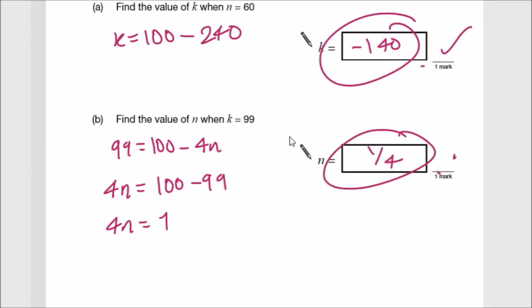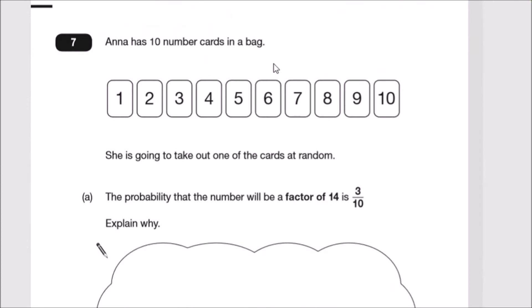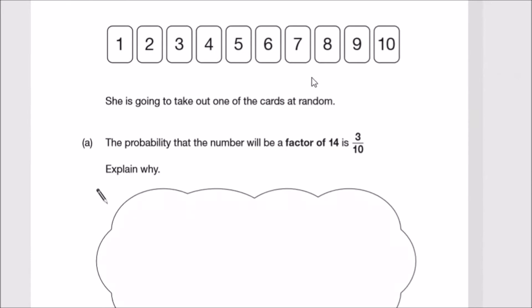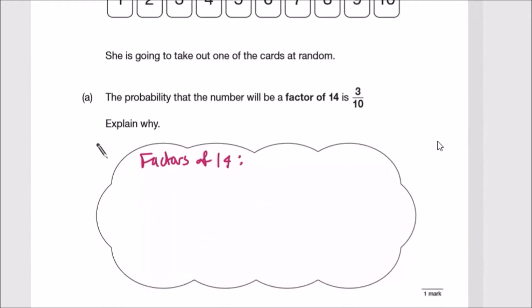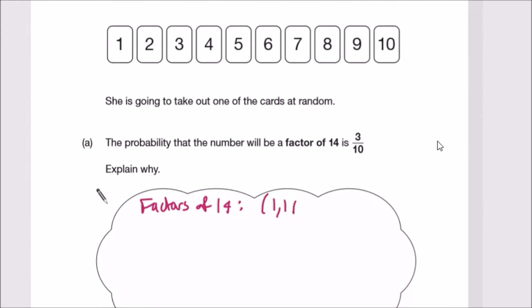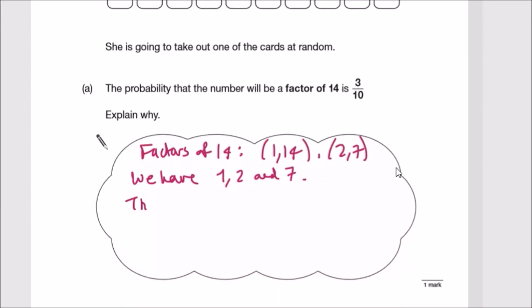Number seven: Anna has 10 number cards in a bag labeled 1 to 10. She's going to take out one card at random. The probability that the number will be a factor of 14 is three tenths. What are the factors of 14? Factors are numbers divisible by 14. To make 14 we need 1 and 14, or 2 and 7. According to the card list, we have three of them: 1, 2, and 7. So three outcomes out of 10, hence three tenths.